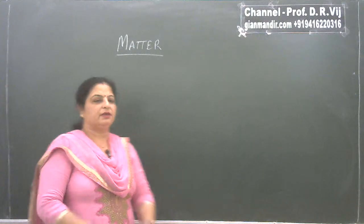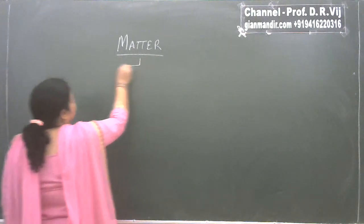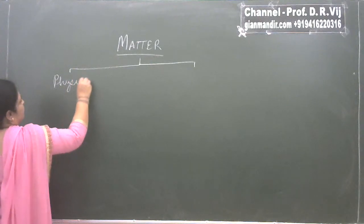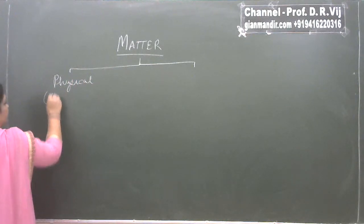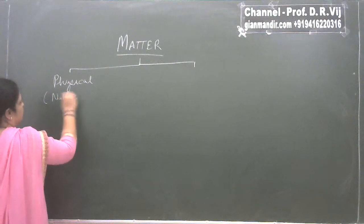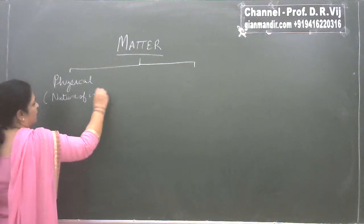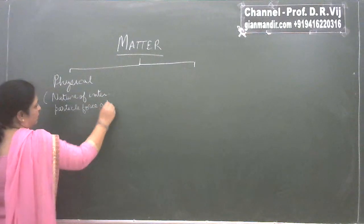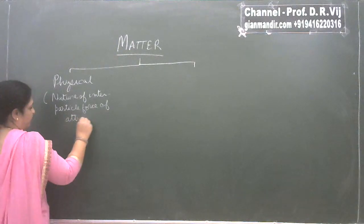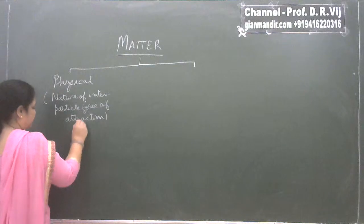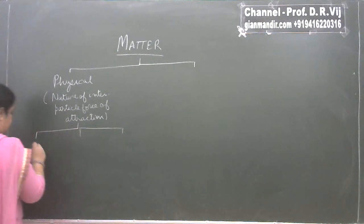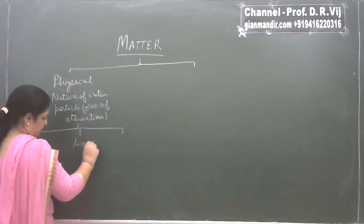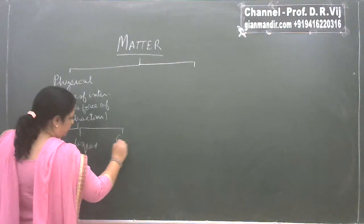If we want to classify matter, it has two types of classification. One is the physical classification, which is based on the nature of interparticle force of attraction. On that basis, matter is of three types: solid, liquid, and gas.